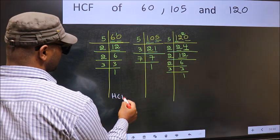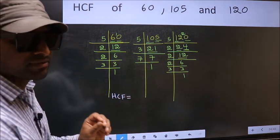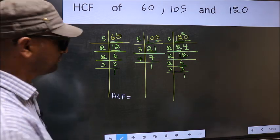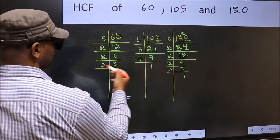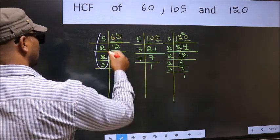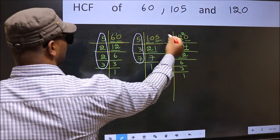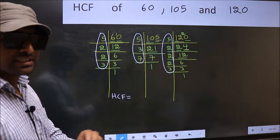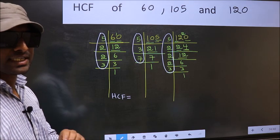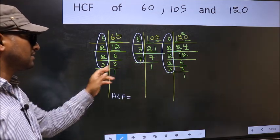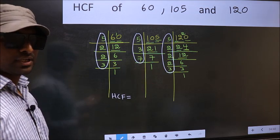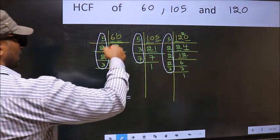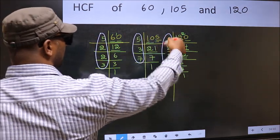Therefore, our HCF is the product of numbers which should be present in these three places. That is here, here, and also here. I repeat, HCF is the product of numbers which should be present in these three places. So now, let us find the numbers which should be present in all three places.